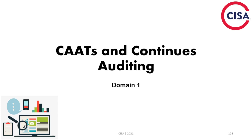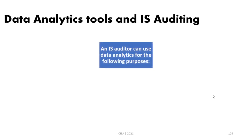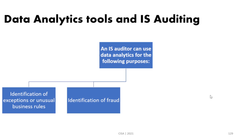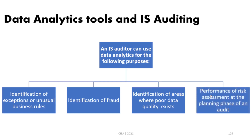Welcome. In this part we will discuss computer assisted auditing tools and continuous auditing. As an information system auditor, you are eligible to use data analytics tools. These tools can help an IS auditor to identify exceptions or unusual business rules, assist in identification of fraud, identify areas with poor data quality, and perform risk assessment at the planning of an audit.